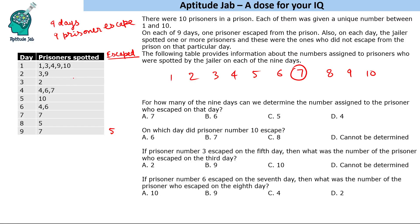Now let us look at prisoners 4 and 6. Prisoners 4 and 6 cannot escape on days 7, 8, or 9. Three prisoners have to escape on days 7, 8, and 9: one of them is prisoner 5, and 4 and 6 have to be the other two. We do not know their exact order, but 4 and 6 will escape on those 2 days.